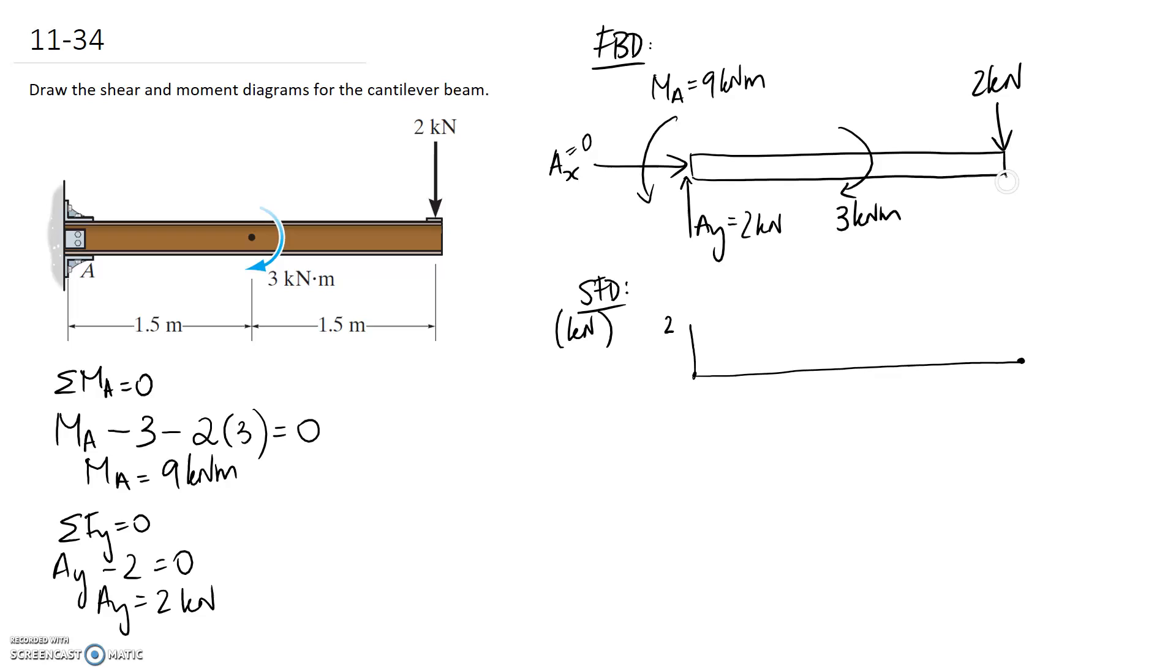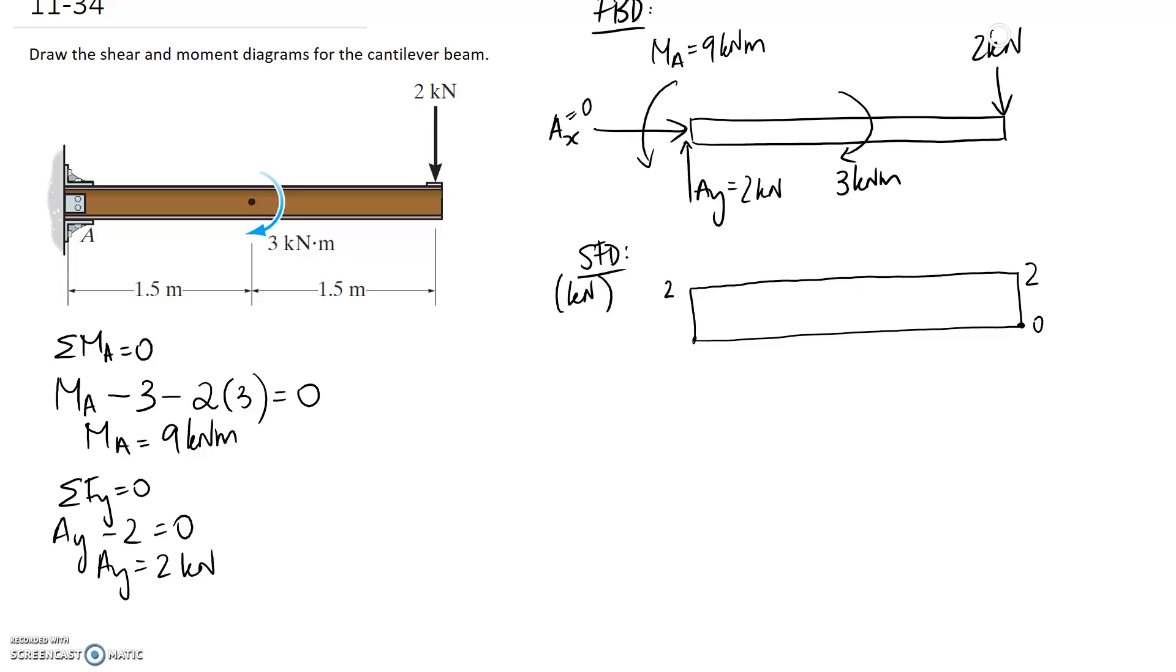Keep going, keep going. The only other place we have a force is on the end here. So it's all stable along here and then push down, it's going to go from two minus two back to zero at the end here. So that's the shear force diagram.